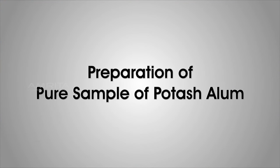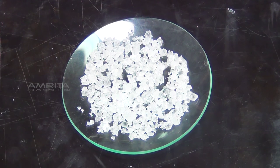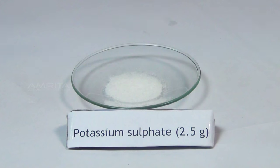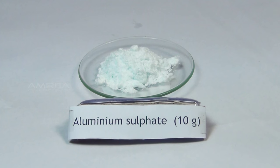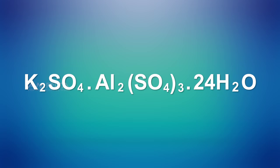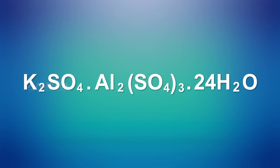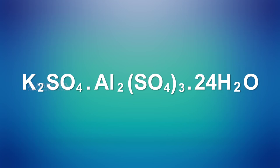Preparation of Pure Sample of Potash Alum. Potash alum is a double salt of potassium sulphate and aluminium sulphate. It has the formula K2SO4·Al2(SO4)3·24H2O.